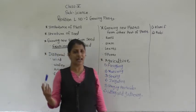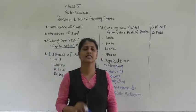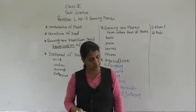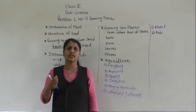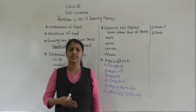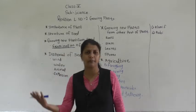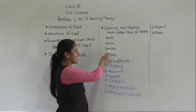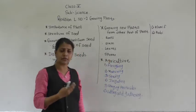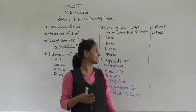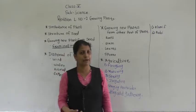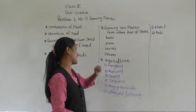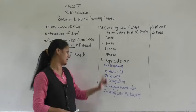There are also plants which can be grown through the stem. For example, if you take the stem of a rose plant and plant it in a pot, it can grow. Then there are some plants which can be grown by leaves — for example, bryophyllum.